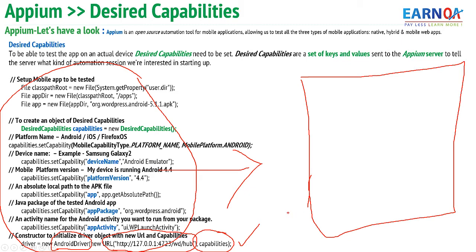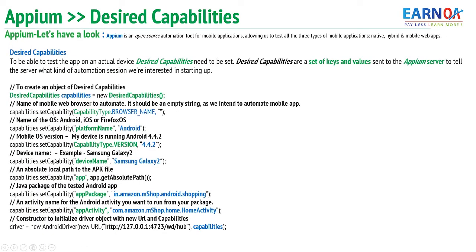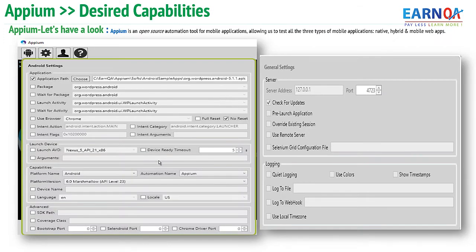Here is another example showing the same approach: we specify the platform, version, real device name, application path, package, and activity, followed by the Appium URL and the capabilities. This way Appium can read the desired capabilities — what we intend to test — and based on those settings and configurations, Appium can create a session for us with respect to the mobile device.